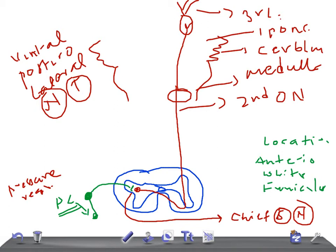The lateral spinothalamic tract also terminates at the ventral posterior lateral nucleus of the thalamus — the same location. The neurons of this thalamic nucleus form the third order neurons, which run up to the sensory cortex.